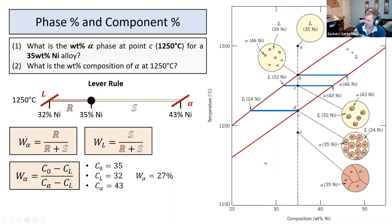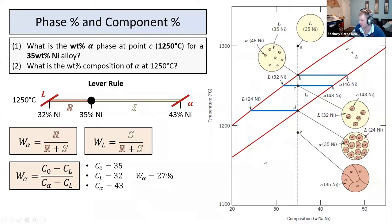As we decrease the temperature and wait for equilibrium, that solubility limit is changing. As we decrease the temperature, the amount of nickel in alpha decreases. If we had built up our alpha and come down, the existing alpha needs to get rid of nickel — nickel gets removed. Eventually you'll have 35% nickel. So it went from 43% nickel down to 35% once you decrease the temperature all the way to room temperature.